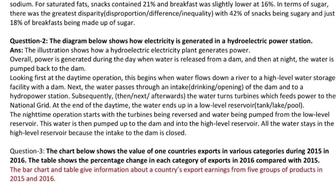Looking first at the daytime operation, this begins when water flows down a river to a high-level water storage facility with a dam. Next, the water passes through an intake of the dam and to a hydropower station. Subsequently, the water turns turbines which feed power to the national grid. At the end of the daytime, the water ends up in a low-level reservoir.